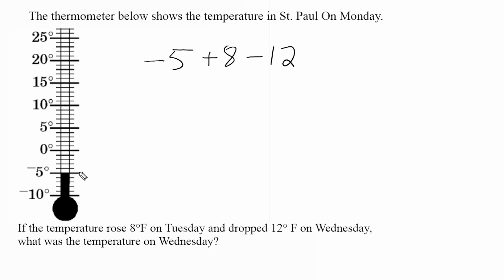So starting at negative five, we would go up one, two, three, four, five, six, seven, eight, and increasing a distance of eight puts us at three above zero. Now from three above zero, we have to drop twelve degrees.